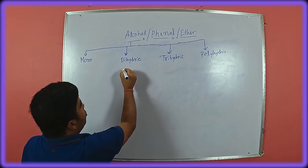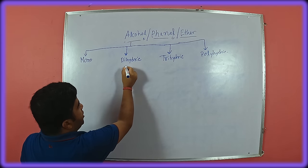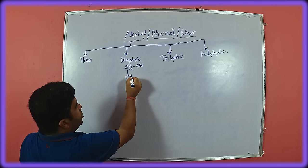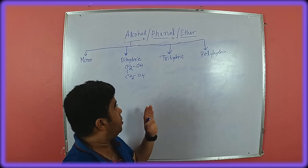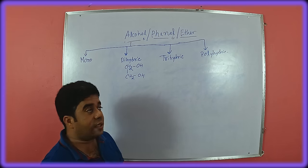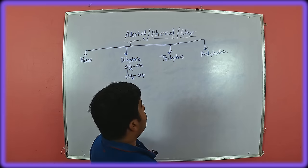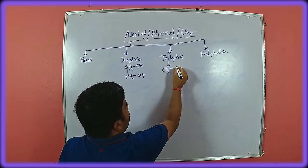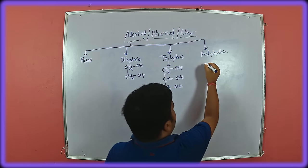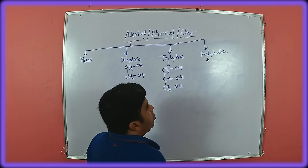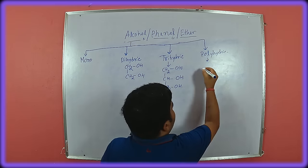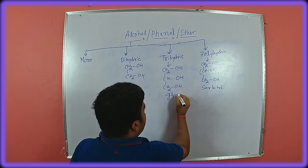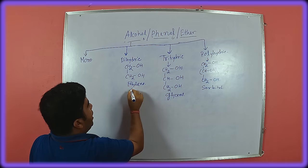For dihydric alcohol, the very important example is ethylene glycol (CH2OH-CH2OH). These are very important dihydric alcohols. Then trihydric alcohol — the very well known example is glycerol. And polyhydric alcohol — the very well known example is sorbitol, present in various medicines.